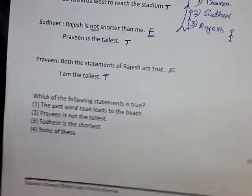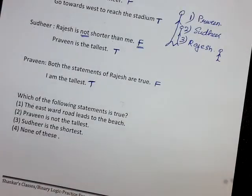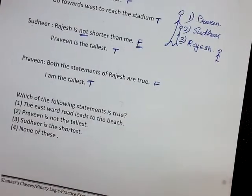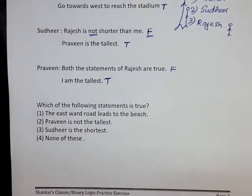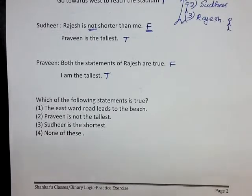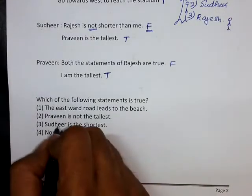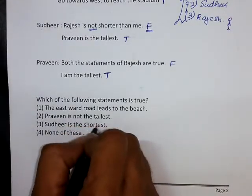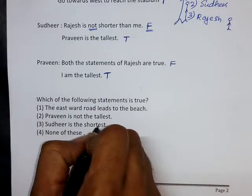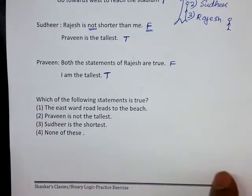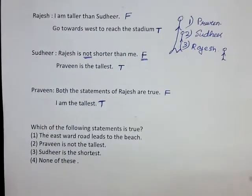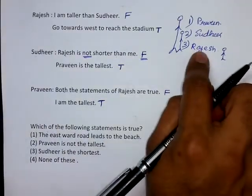Now let us look at the question: which of the following statements is true? 'Sudhir is the shortest' — that is false because Rajesh is the shortest.